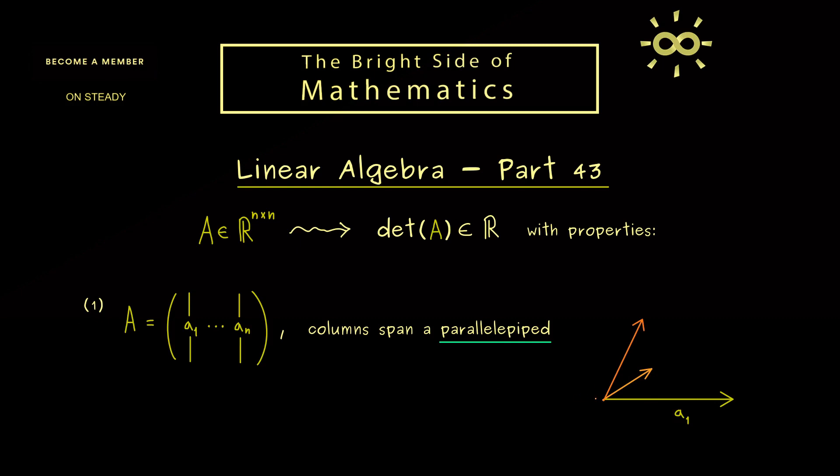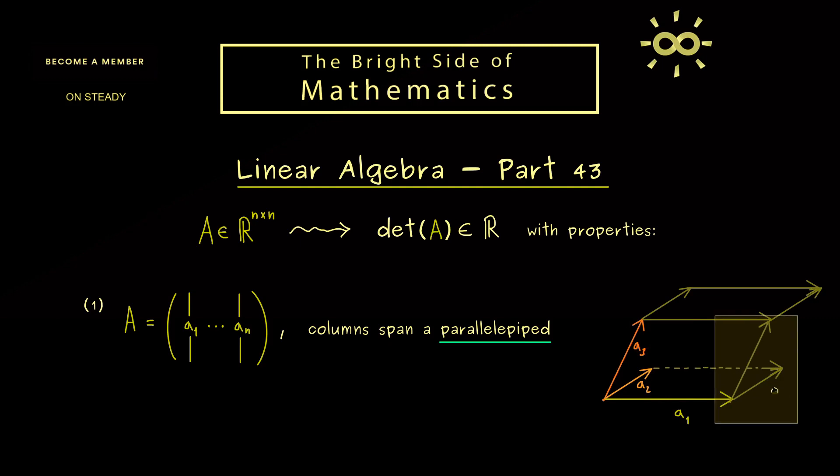So for example, this one could be A1, this here is A2 and there we have A3. And now the idea is that we can just translate all these vectors to the end of the arrows. And then what we get is a well-defined three-dimensional figure. And this is what we call the parallelipiped.